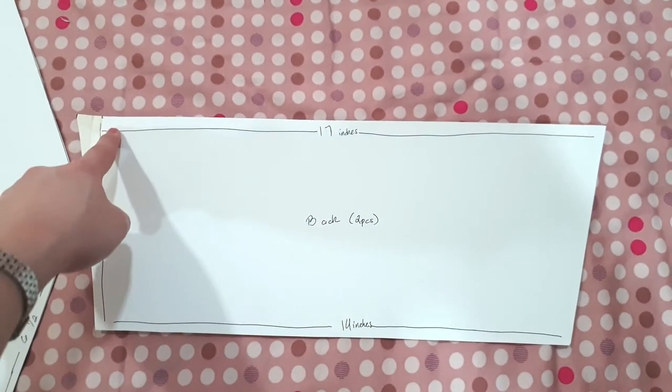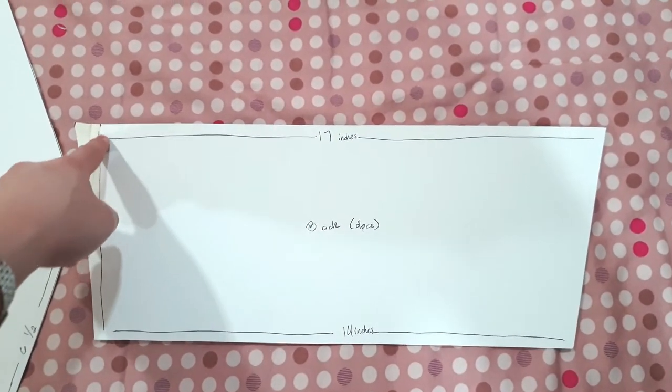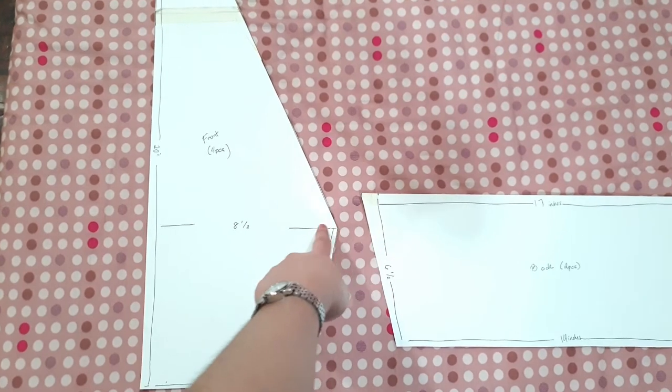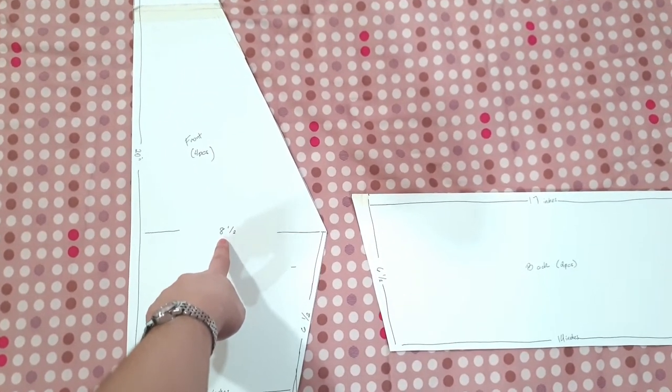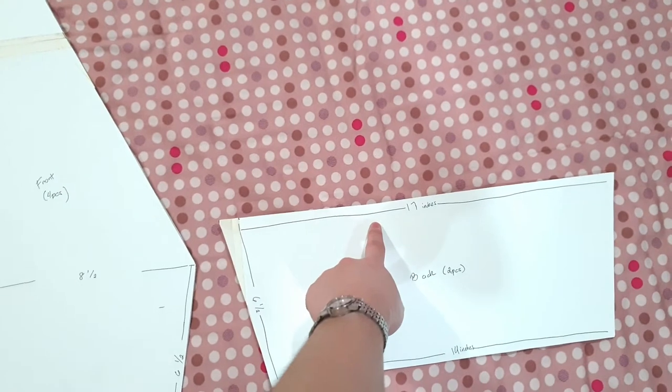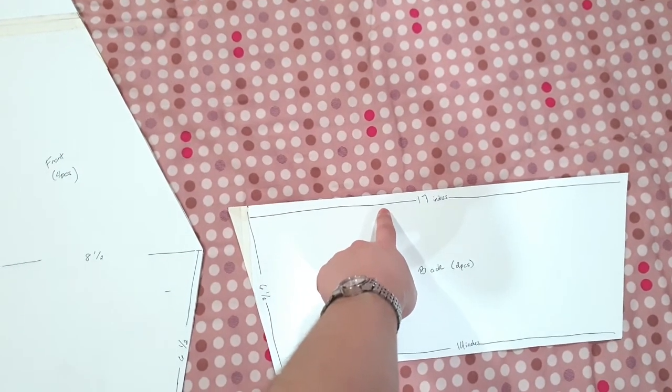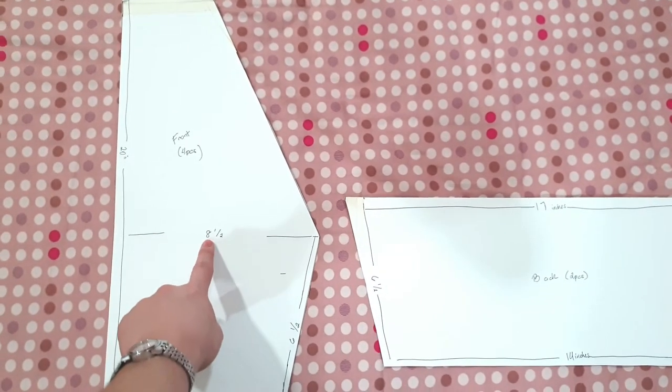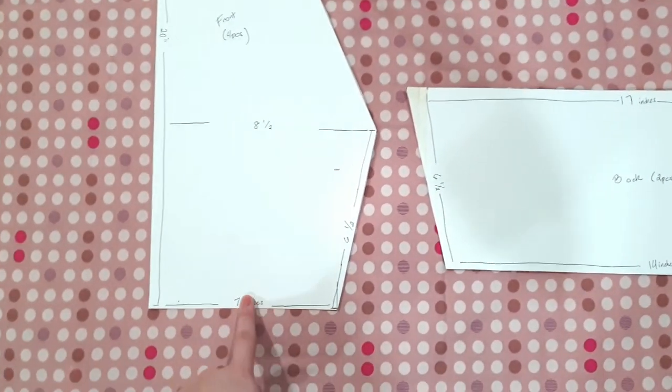Now let's move on to the front piece of our top. This is my bust measurement, which is eight and a half inches. This is half of the back piece, so 17 inches divided by two is eight and a half.